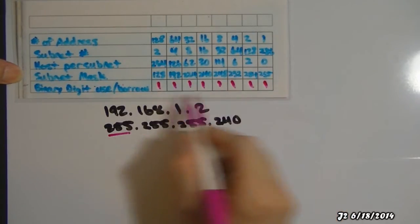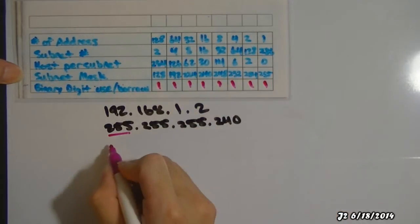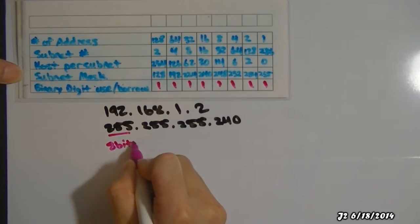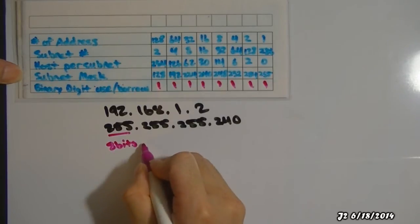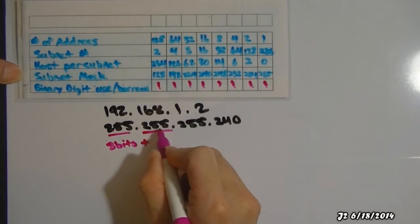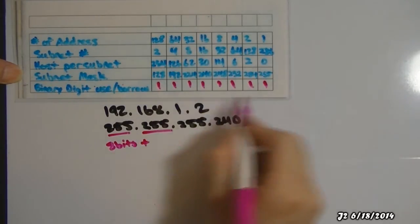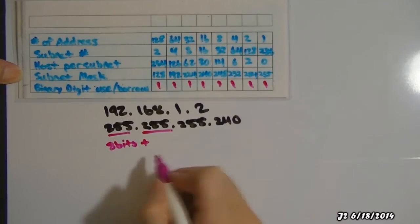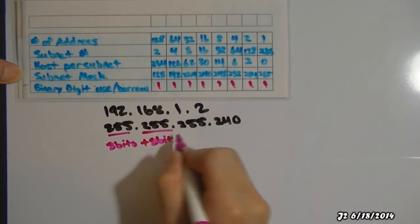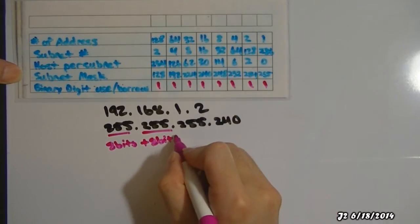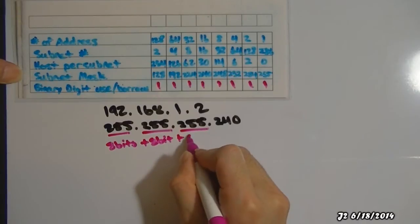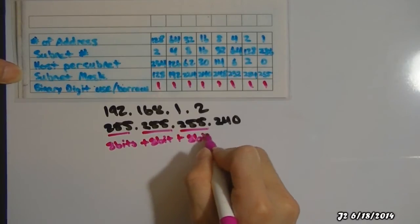So I got 8 of these right here, so that would be 8 bits. Plus another 255, that's 8 of those again — so that would be 8 bits. And it's the same with the next one — that would be 8 bits.